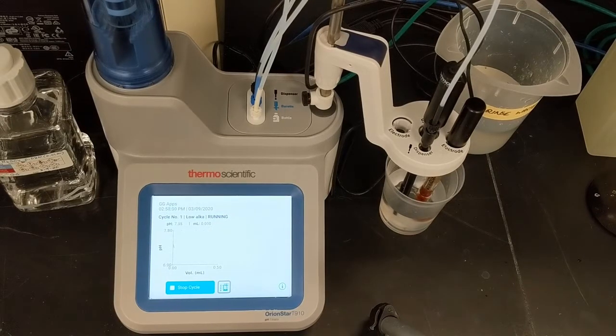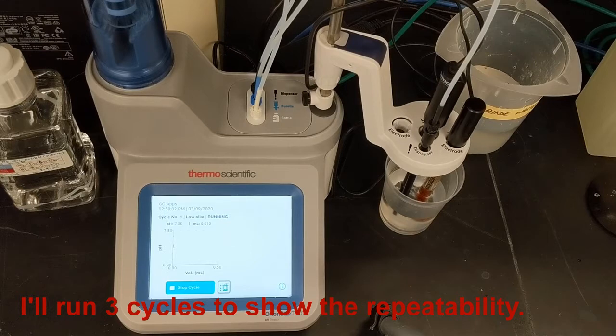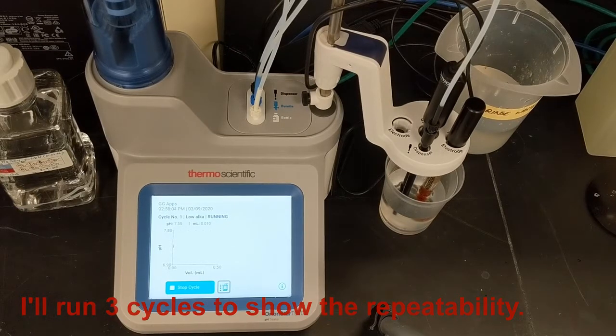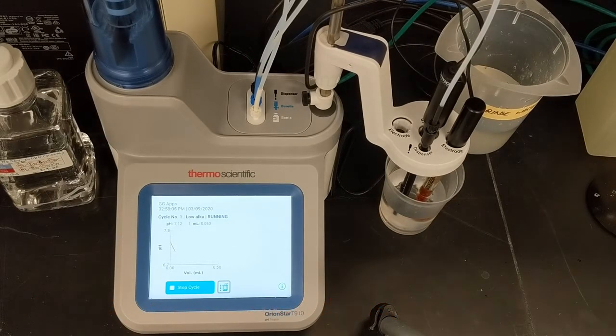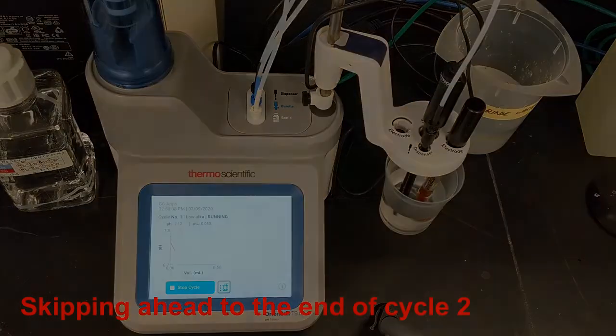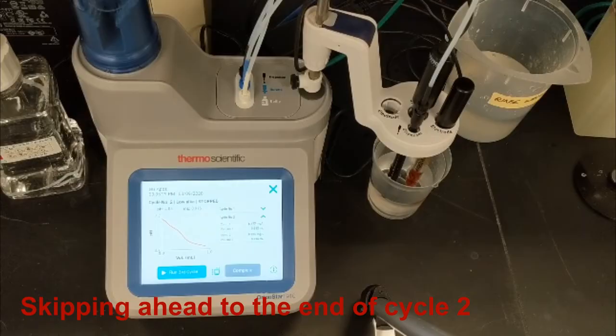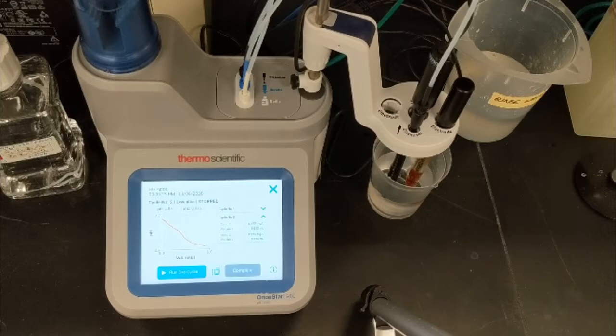I've decided to run three cycles of my sample to demonstrate the repeatability of this titration. I'm skipping ahead here to show the results displayed on screen after the second cycle. Note that the titrator is programmed to find endpoint 1 at pH 4.5 and endpoint 2 at pH 4.2.